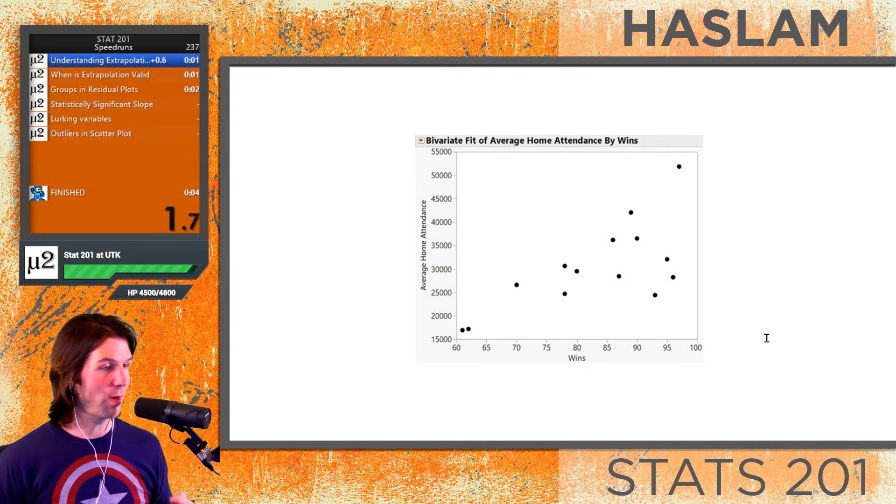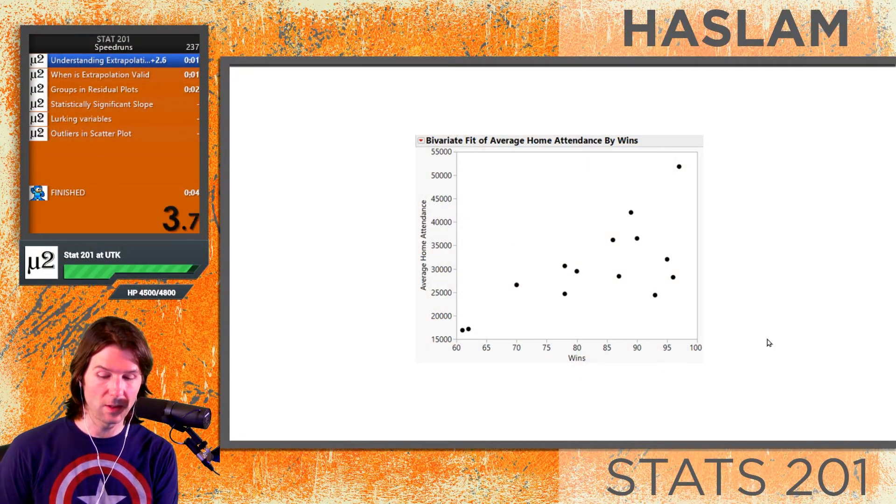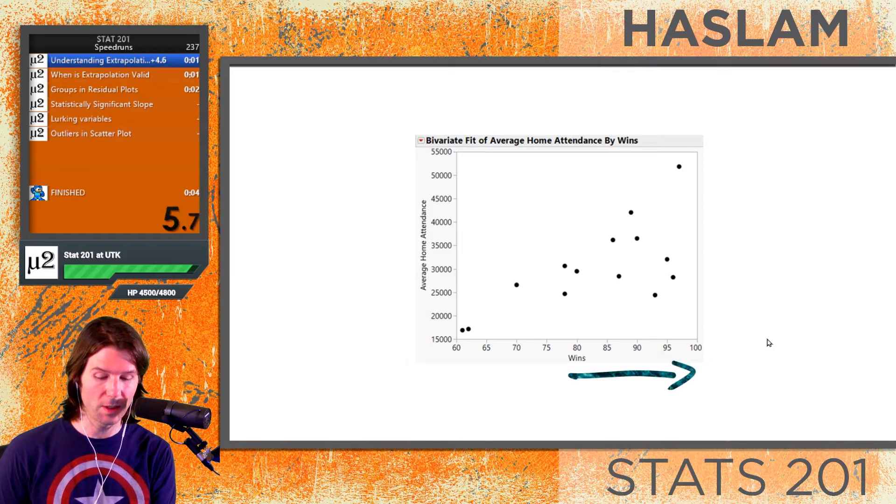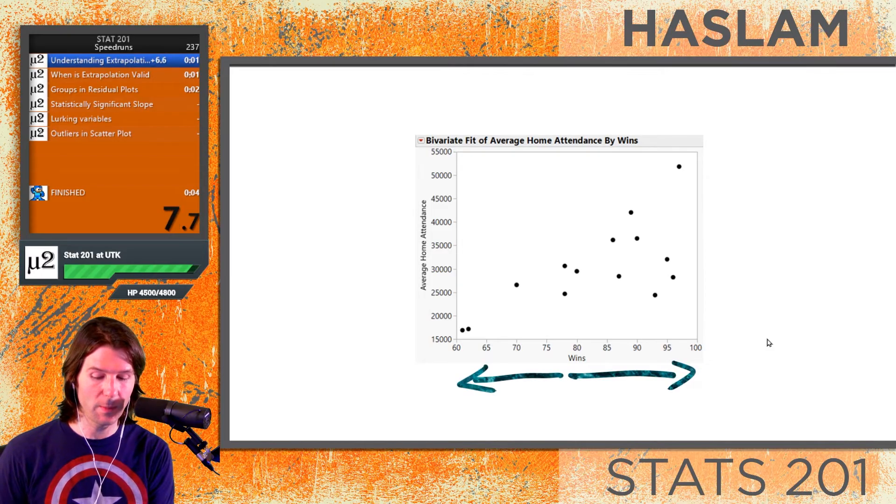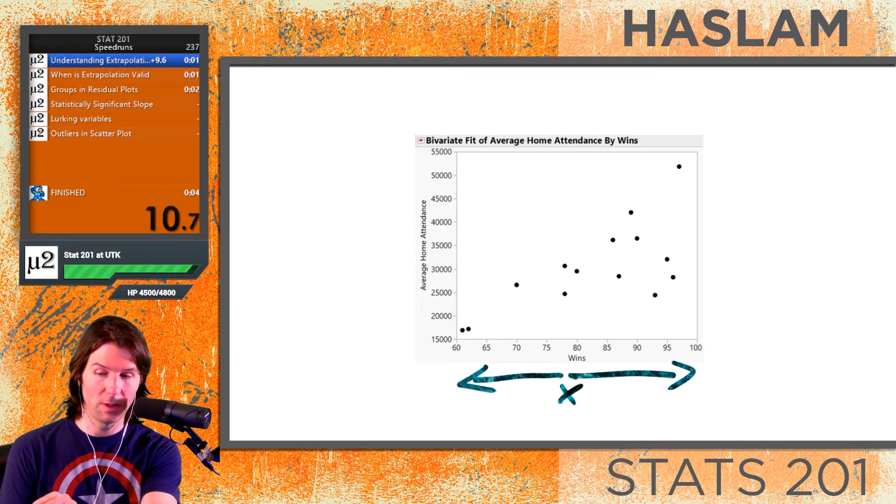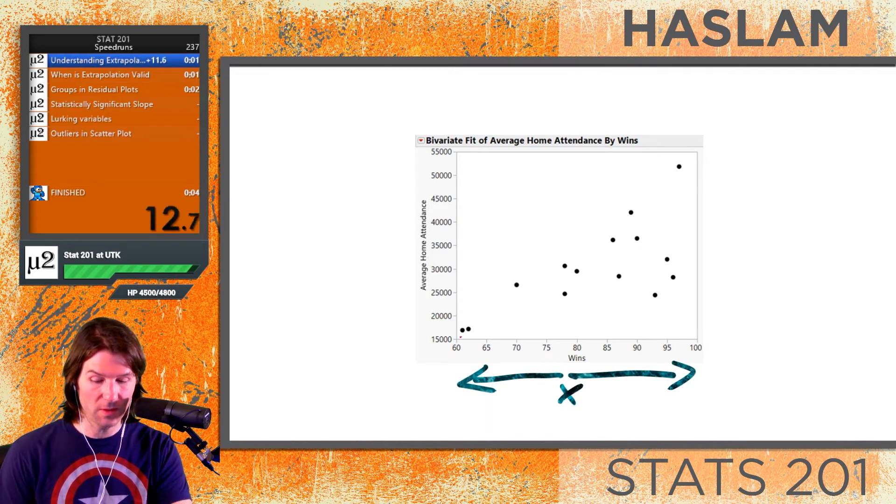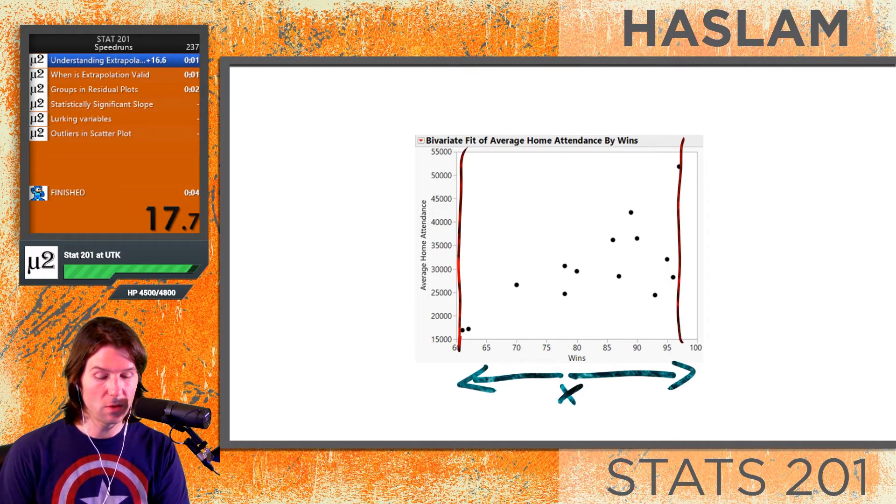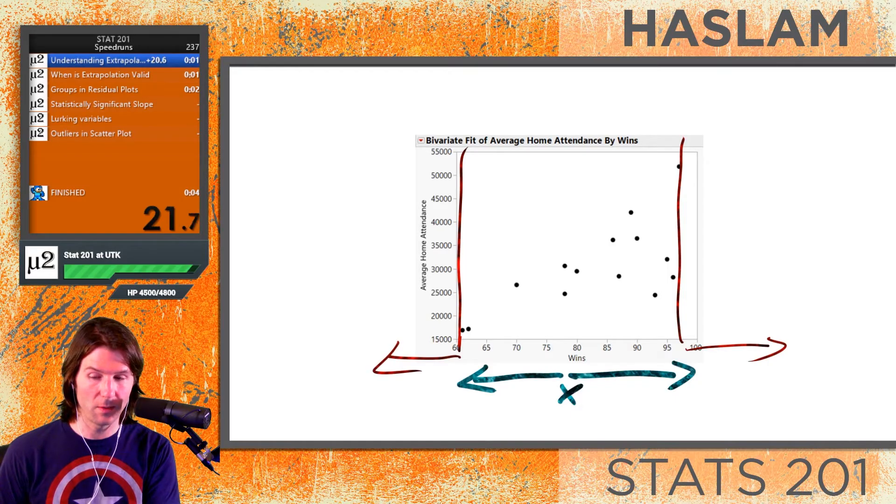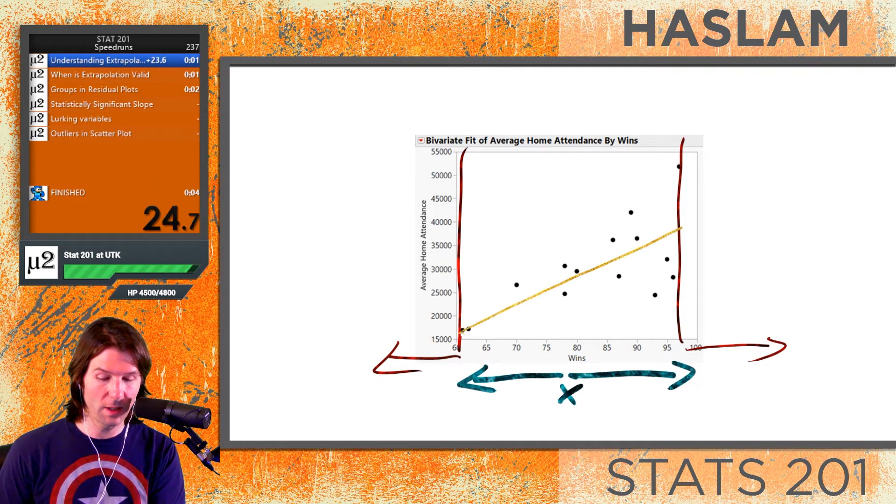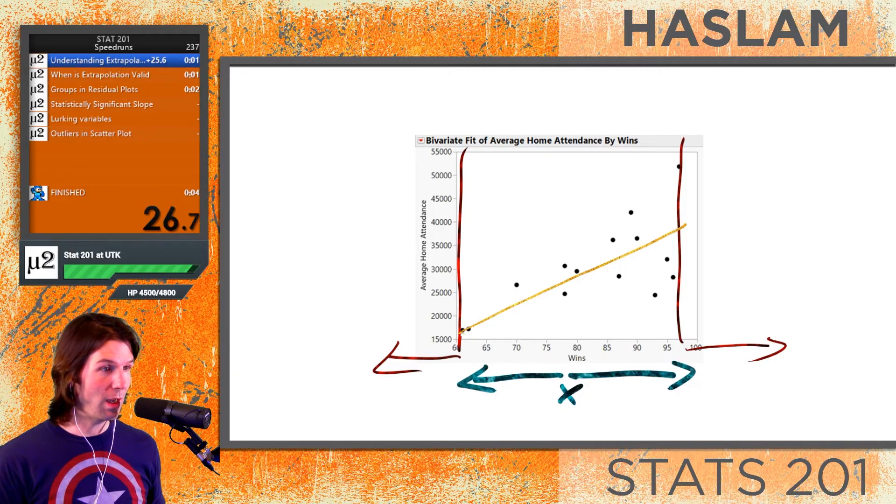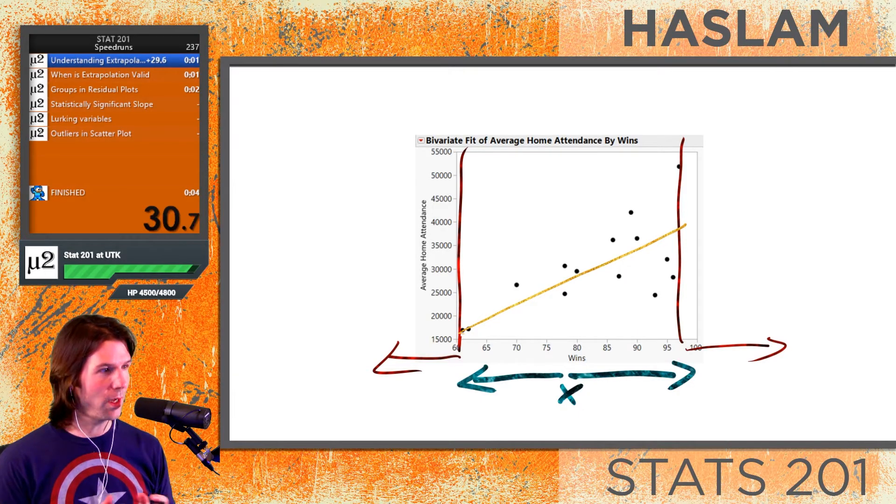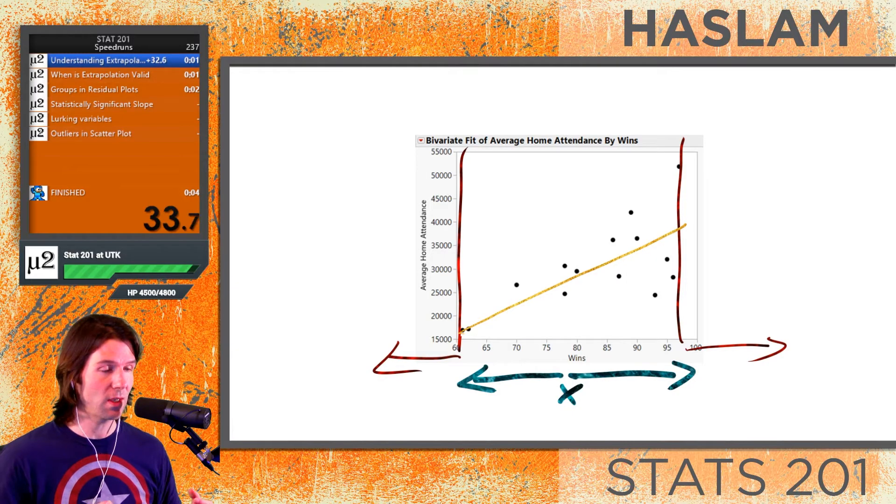When it comes to understanding extrapolation, we have to know what it means. An extrapolation is when we make predictions outside the x bounds of the model. This model goes as low as about 61 for the wins and as high as about 97 for the wins. So if we leave this, we are extrapolating outside the bounds of the model because this linear model, this line, was created from the x values going from about 61 to 97.